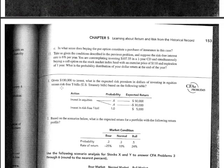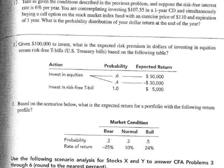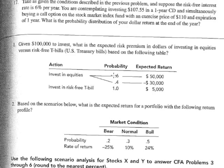Let's take a look at some CFA problems. Problem number one: given $100,000 to invest, what is the expected risk premium in dollars of investing in equities versus risk-free T-bills? Based on the following table, if you invest in equities, there is a 60% probability that you will get $50,000 in return, and a 40% probability that you will lose $30,000.